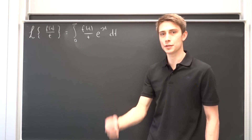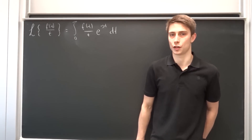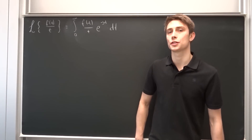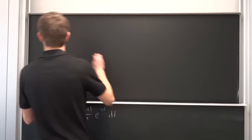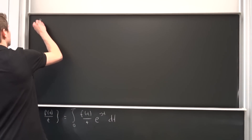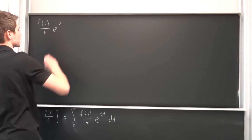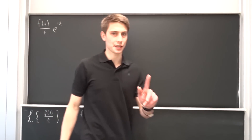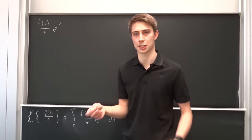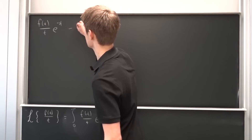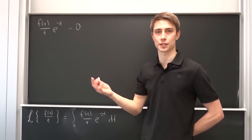We've got a new mission. We want to express this integral in terms of a different function. Just try following my thought process on this one. So let's take a look at f(t) over t times e to the minus st. We could add or subtract zero and that won't change anything, so let's just subtract zero.